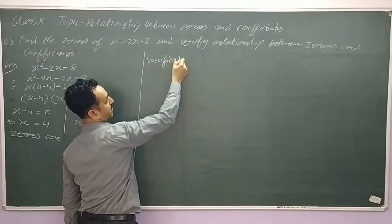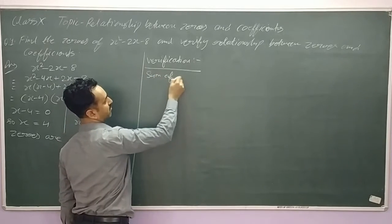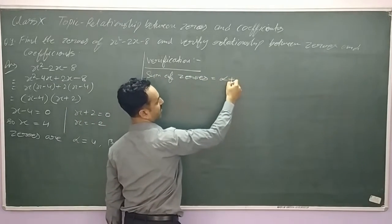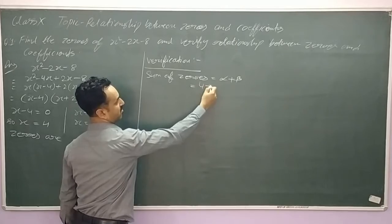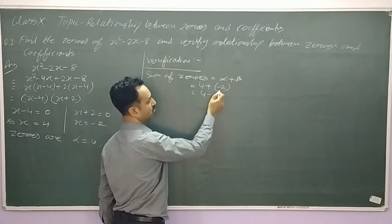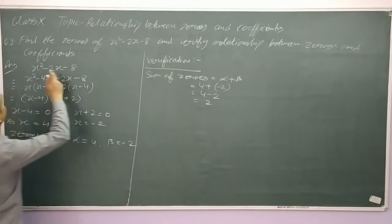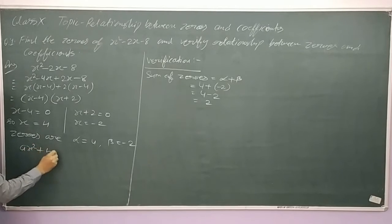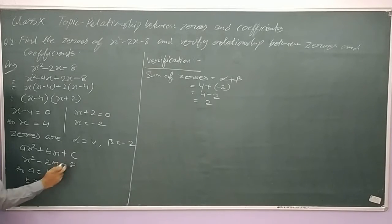Now for verification — sum of zeros equals alpha plus beta, which is 4 plus (minus 2), so 4 minus 2 equals 2. Now we compare with the standard form ax squared plus bx plus c against our polynomial x squared minus 2x minus 8. So a equals 1, b equals minus 2, and c equals minus 8.